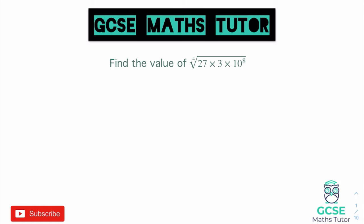Something we can think about here is looking at the base numbers. If we look at the start of some of these pieces we have a 27 and a 3. Now 27 is actually a power of 3 — we could write 27 as 3 to the power of 3, as it is 3 cubed. So we've got 3 to the power of 3 multiplied by 3 to the power of 1, and we can add those powers together since we're multiplying with the same base number.